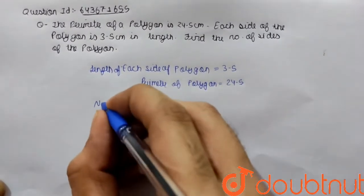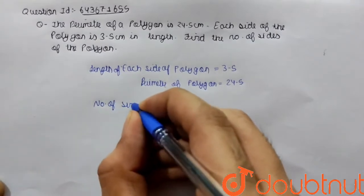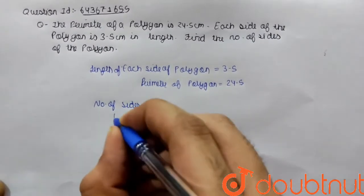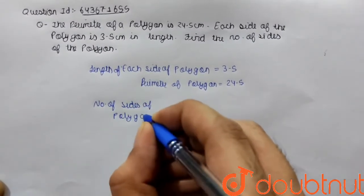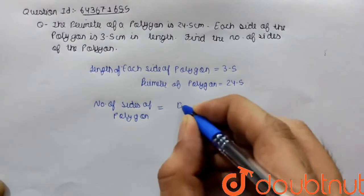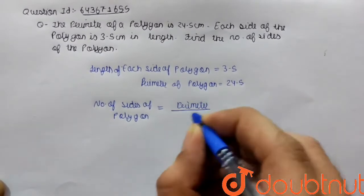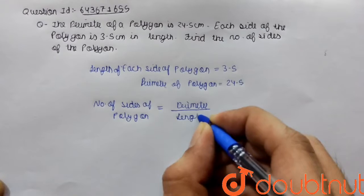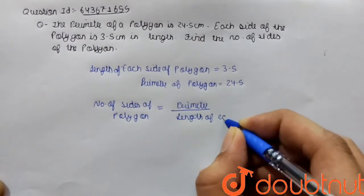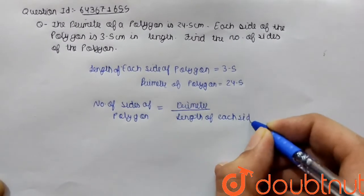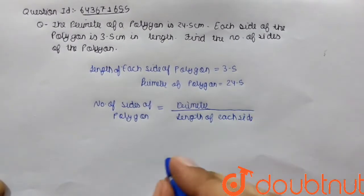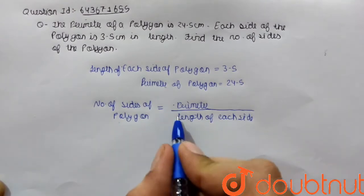Now we know that the formula for number of sides of polygon equals perimeter of polygon upon length of each side.